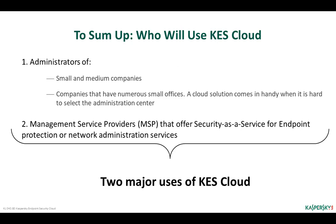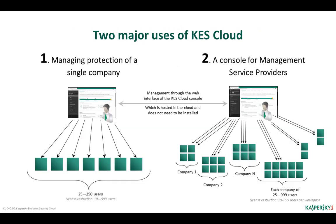When a network joins numerous small homogeneous offices and it is difficult to select a headquarters among them, it might be worthwhile to use an administration server in the cloud. Management service providers who offer security as a service for endpoint protection or network administration services also benefit from KESS Cloud — an administrator can manage many independent companies through a single console, with an individual workspace created for each company. Thus there are two main scenarios: administering a small company, and service providers whose end users are also small companies. In both cases, the license has a limit of up to 999 nodes per workspace.